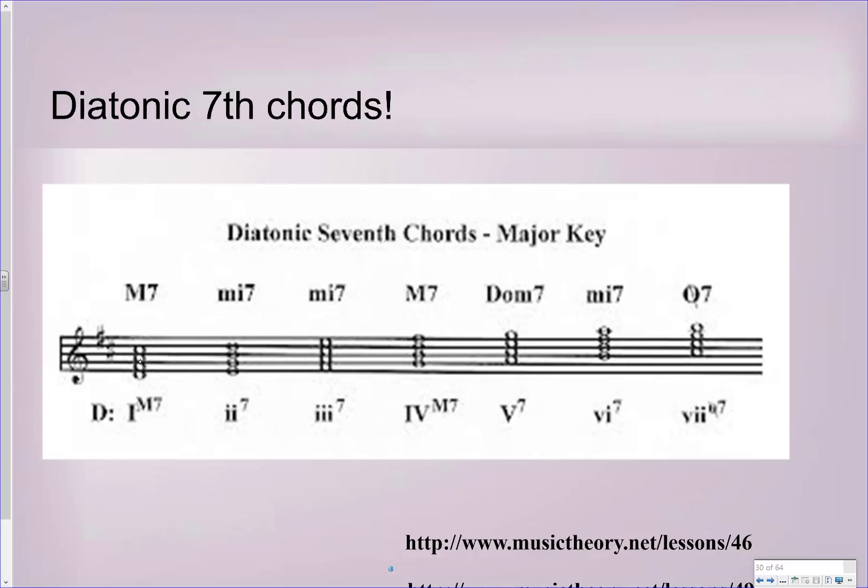Our 2 chord in the key of D major for our 7th chord is a minor 7th, because we have an E minor triad — E, G, B — and from E to D is a minor 7th. Our 3 chord is also a minor 7th, just like our 2 chord.